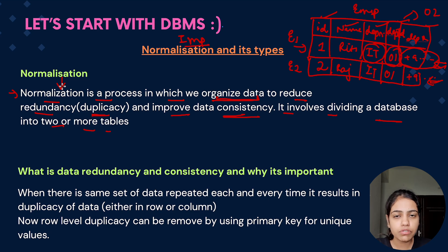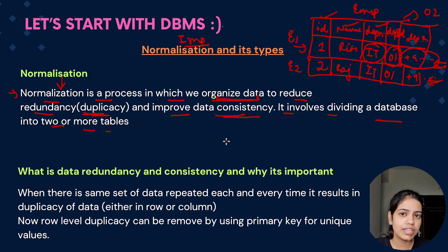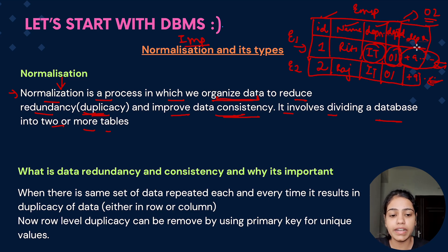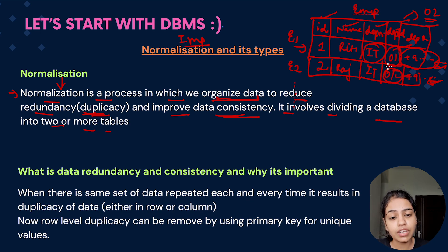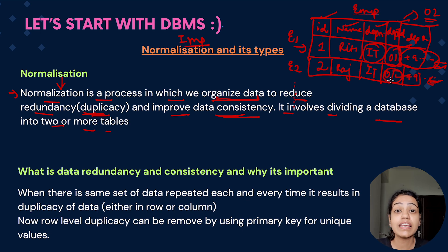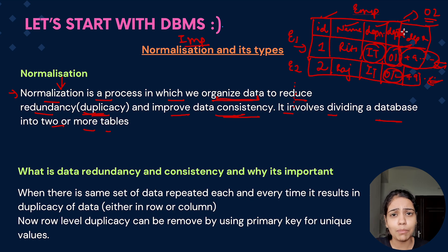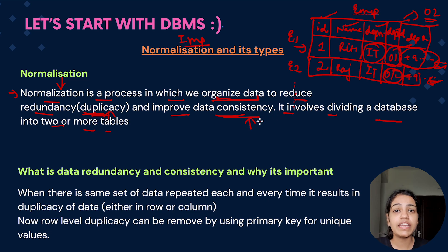So what happens is that if you want to update something — say the department id is now 02 — you have to go ahead and update for each and every employee separately. It is increasing the duplicacy in the database because the same set of data is getting inserted each and every time. We introduce normalization which addresses duplicacy of data and inconsistency of data. Consider that the department id is 02 now for IT. So if you updated it for some but missed one employee, it will show department id as 01 for that employee — that would be inconsistent or incorrect data.